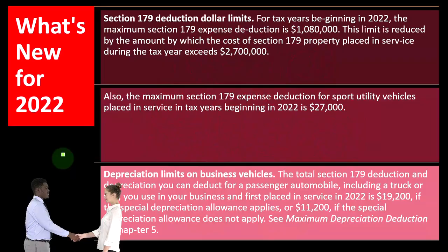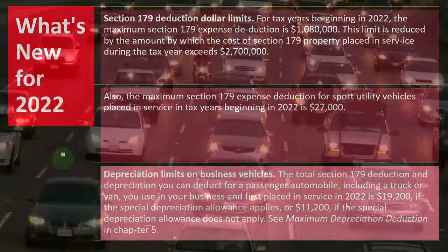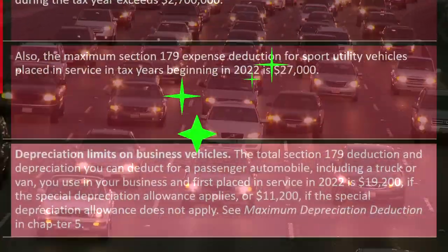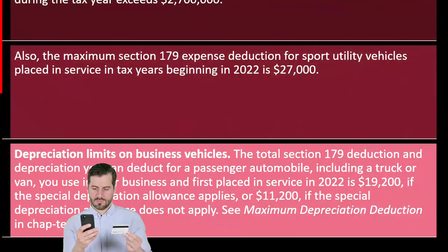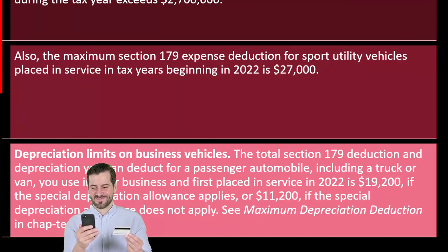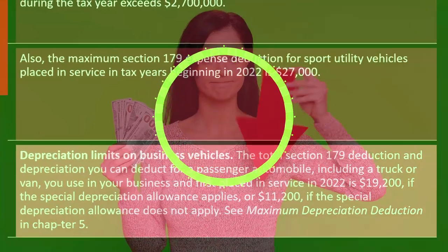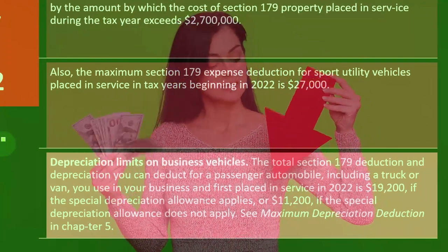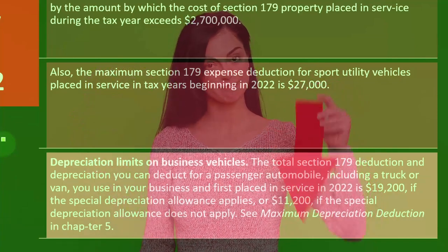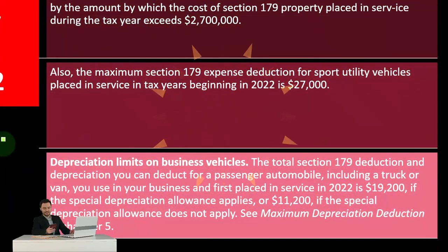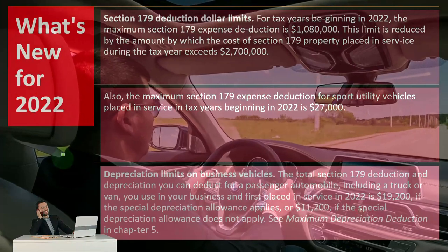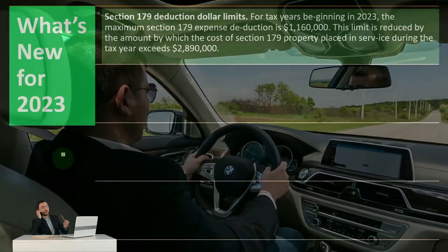Depreciation limit on business vehicles: the total Section 179 deduction and depreciation you can deduct for a passenger automobile — including a truck or van used in your business and first placed in service in 2022 — is $19,200 if the special depreciation allowance applies, or $11,200 if it does not apply. We'll talk about depreciation methods and then dive into Section 179, special depreciation concepts, and limitations for certain types of property such as automobiles, where the government is appropriately skeptical.